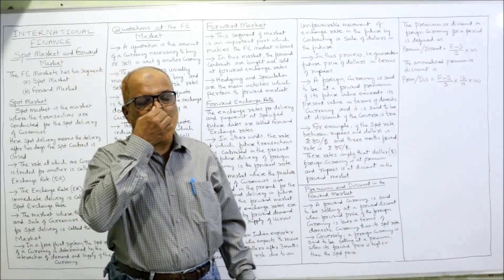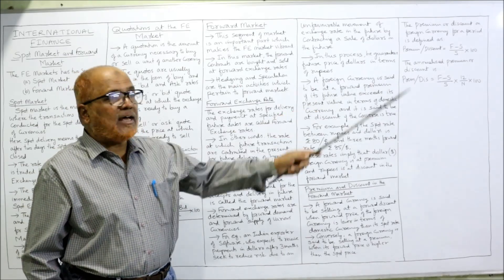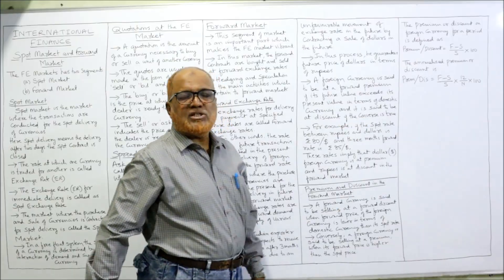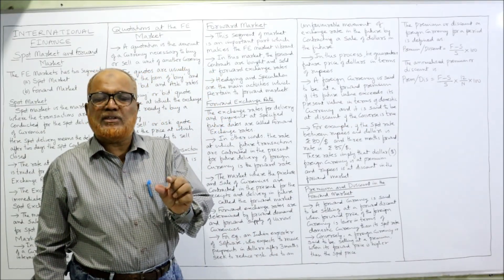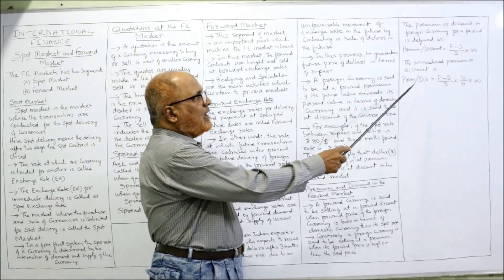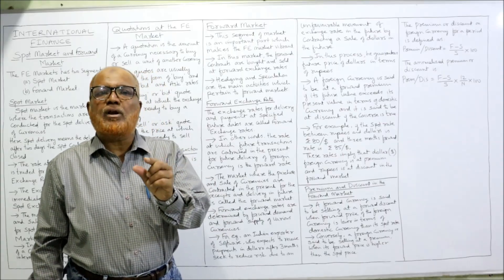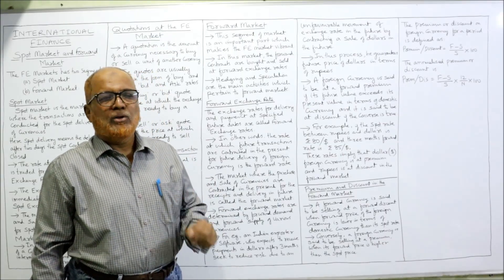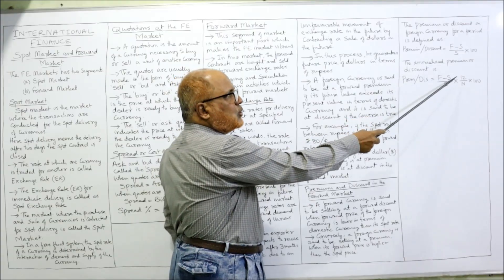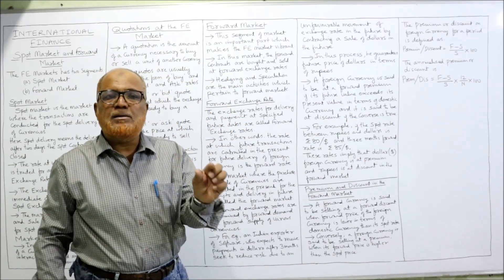If you want the annualized premium or discount — for example, if the premium was calculated for 3 months — the formula is: (F minus S) divided by S, multiplied by 12 divided by n, multiplied by 100, where n is the number of months. So for a 3-month period, multiply by 12 divided by 3 to get the annualized percentage of premium or discount.